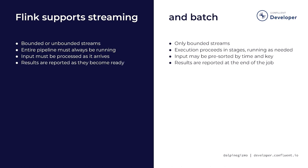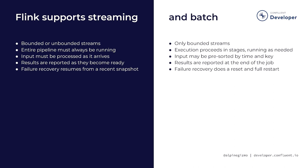In batch mode, processing can continue until the job is complete, at which point the final results can be produced. In streaming mode, each event could turn out to be the last, so results are produced incrementally after every event, or results can be produced periodically based on timers. In batch mode, Flink can recover from failures by restarting the job from the beginning. In streaming mode, Flink tries to minimize downtime by resuming from a recent snapshot.